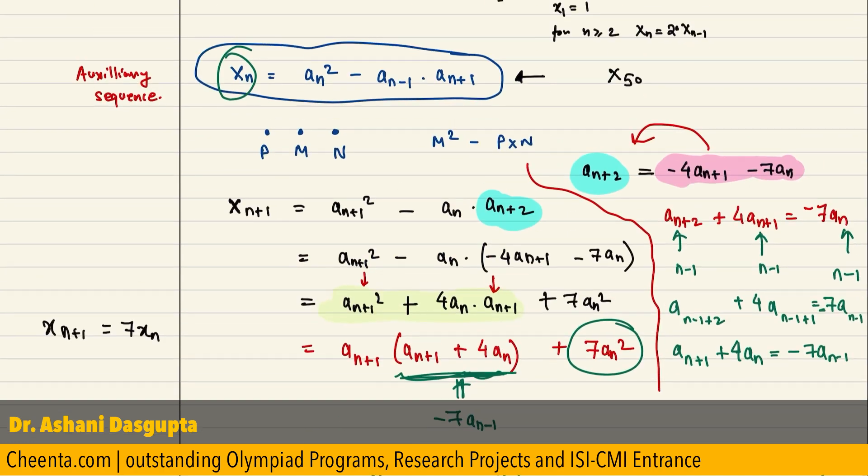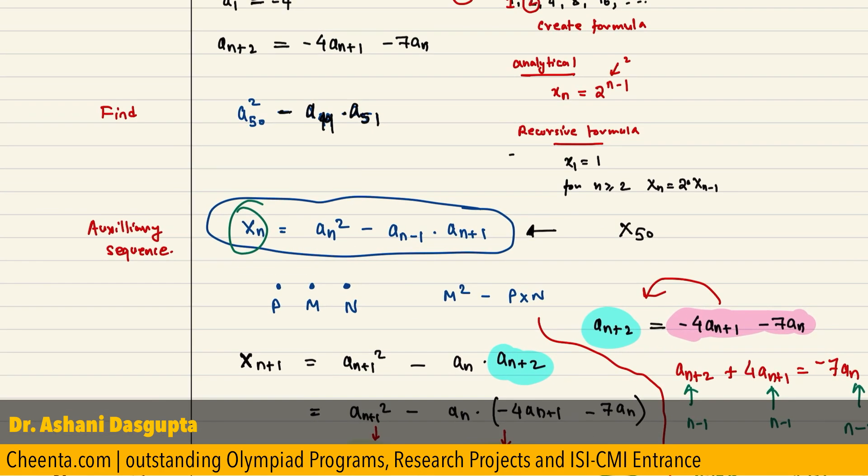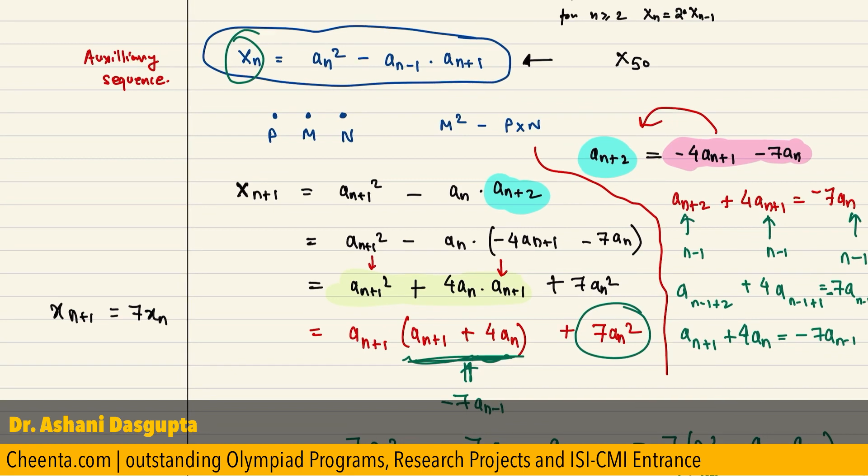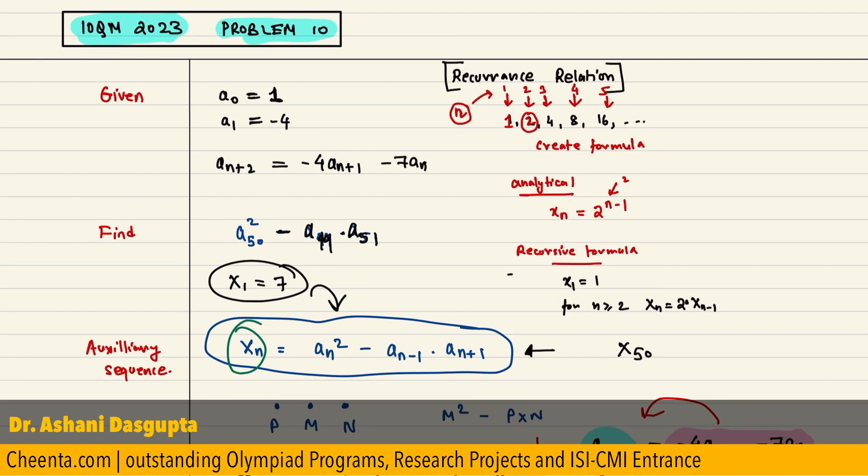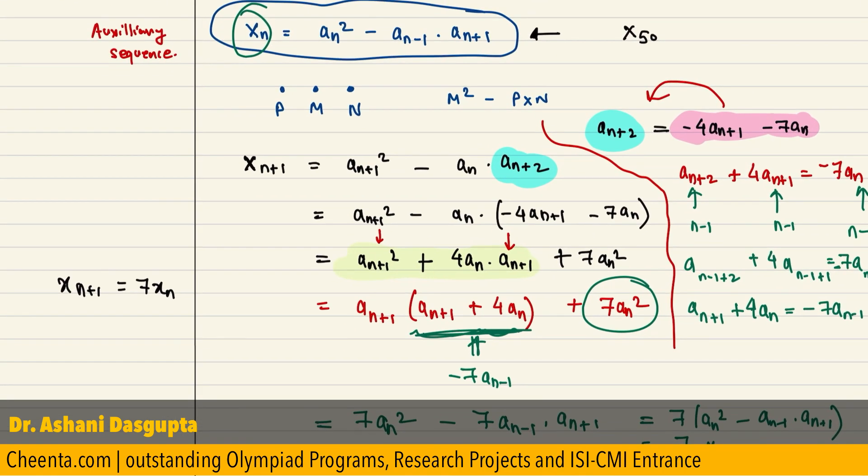And you can easily check by plugging in values that x1 is equal to 7. You can check this. First, calculate a2 and then calculate x1. So, x1 is 7.